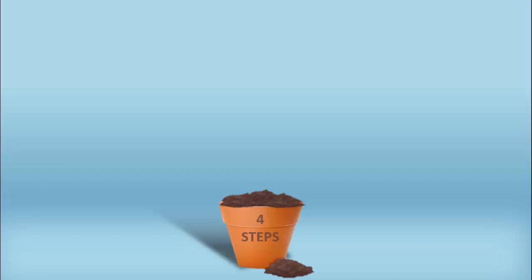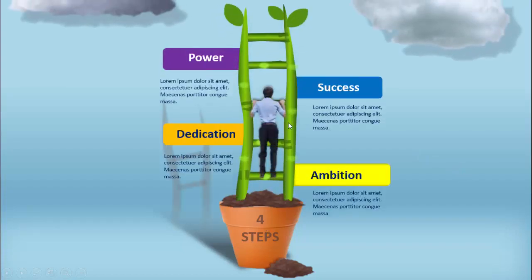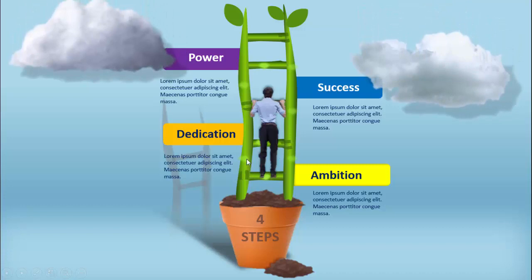In today's tutorial I'm going to show you how to create a four success steps infographics slide in PowerPoint. This is how the slide looks — I've created an empty flower pot, changed the background to a blue color with a gradient fill, and when you click it shows a ladder that looks like a stem or branch. You can add a person climbing, with text labels: ambition, dedication, success, and power, plus detailed text and clouds.